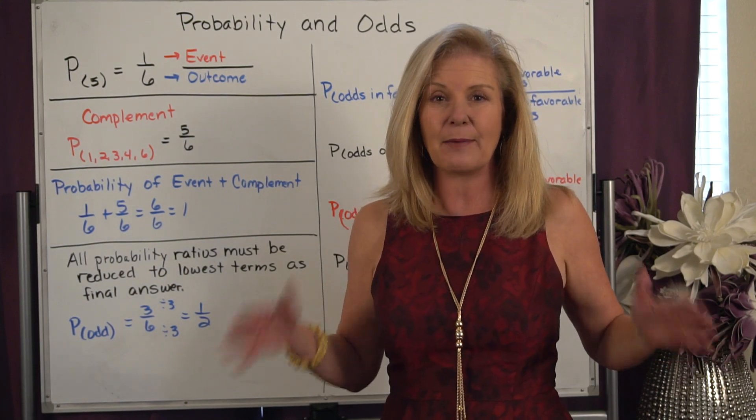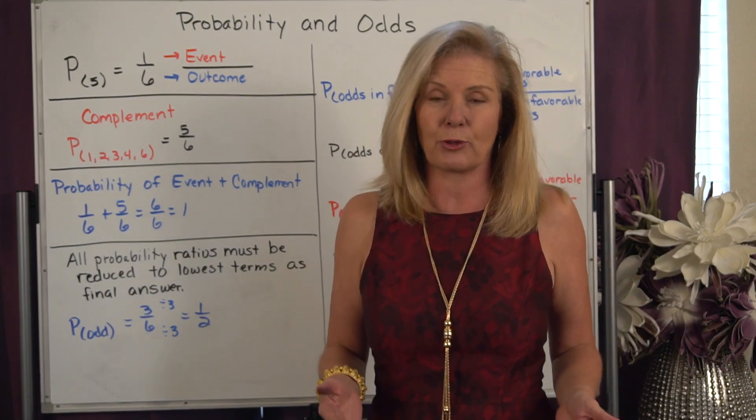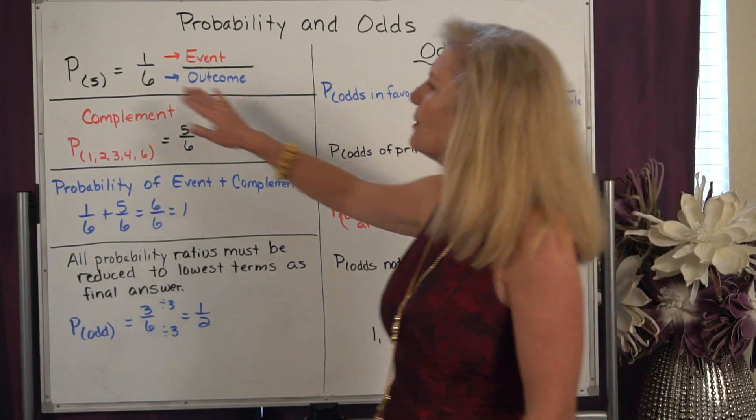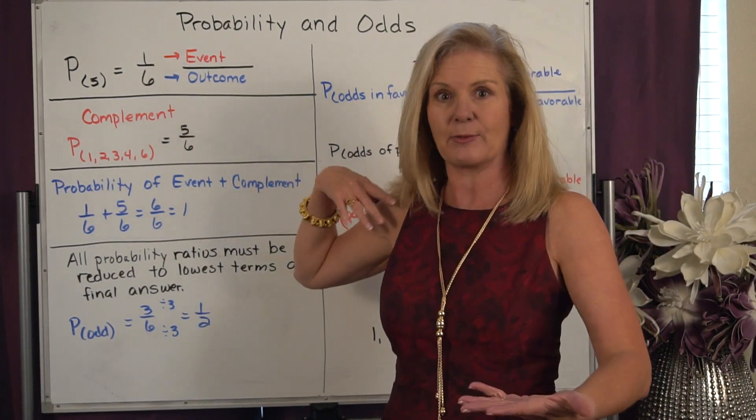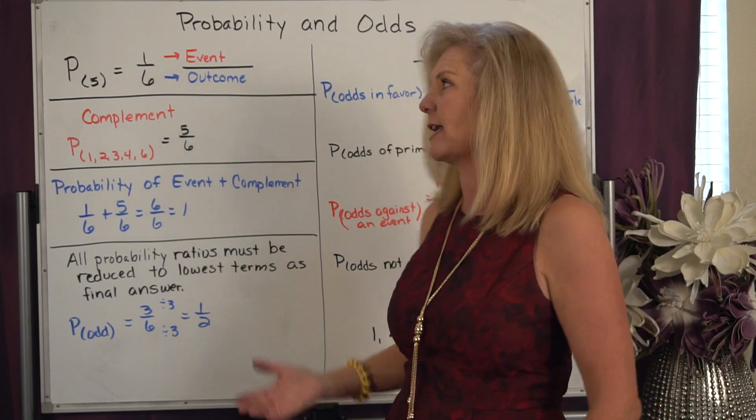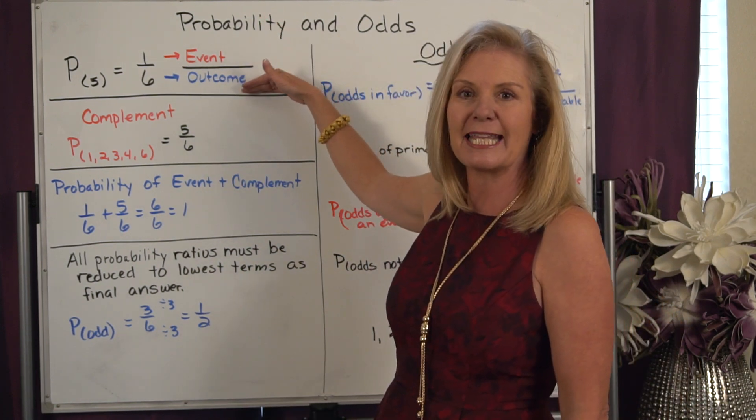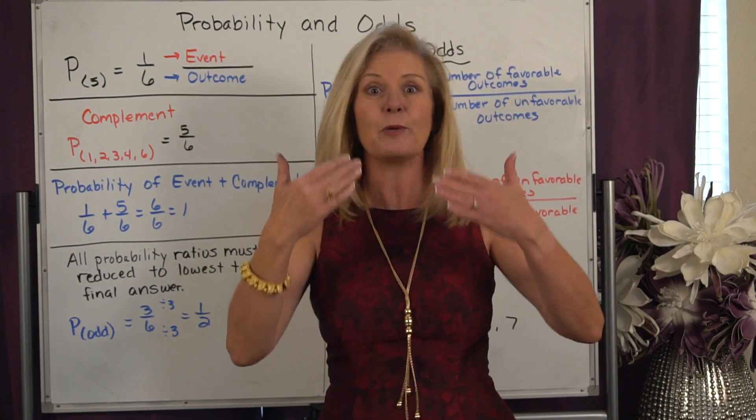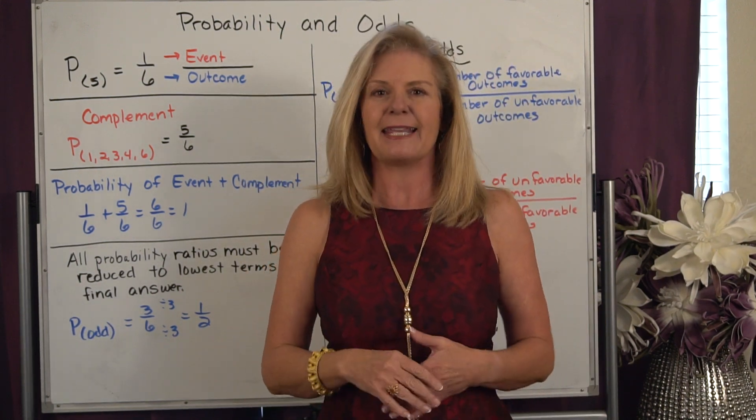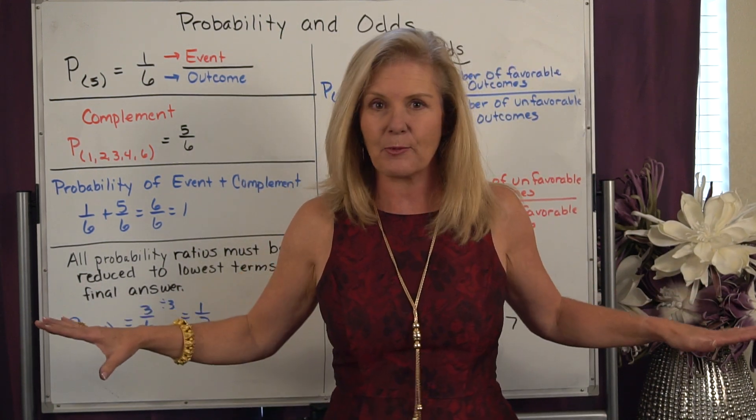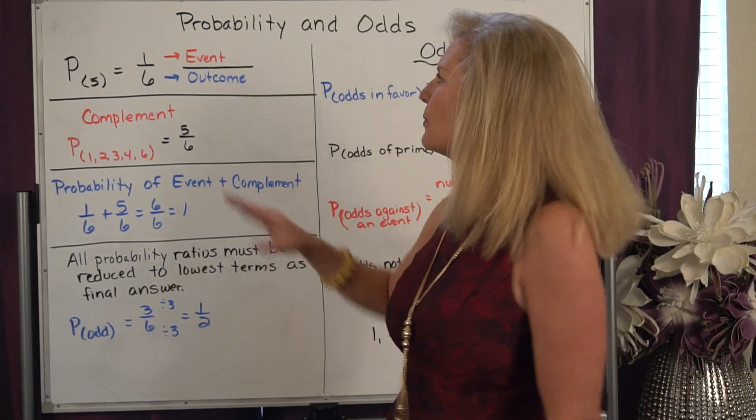Now when we create a probability ratio, and that's what it is, it's a comparison of two things. What we're really comparing is the event compared to the outcome. The event is what do we want to have happen. The outcome is all the possible ways something can happen.